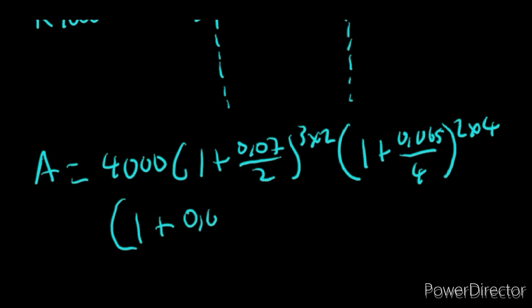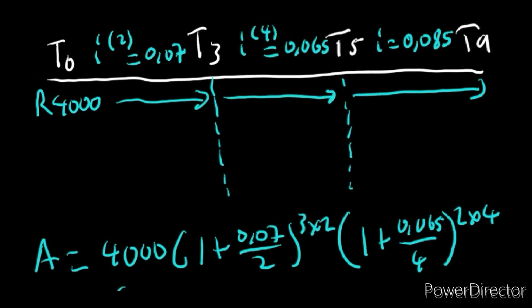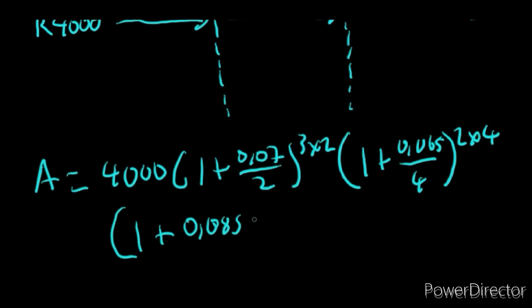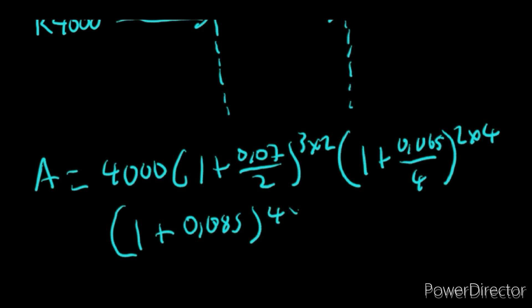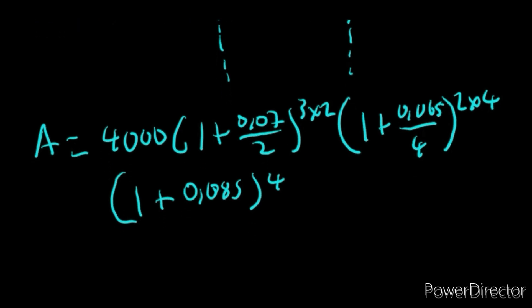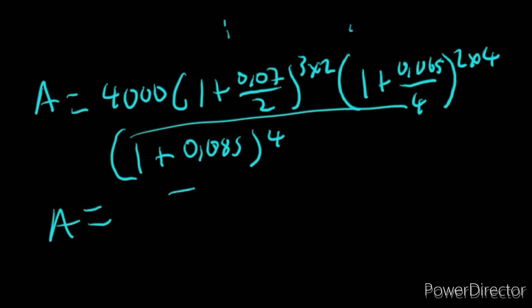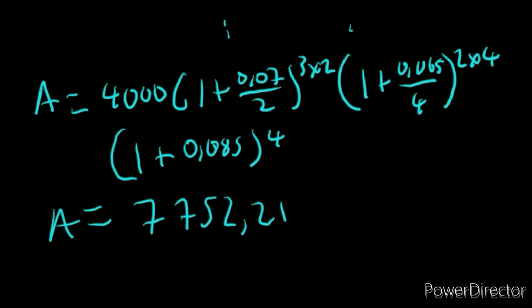It was 8.5%, so 0.085 per annum — no dividing needed. And it was 4 years, so the exponent is just 4. All you have to do is type this whole expression in the calculator exactly as it is so that you don't round off before the final answer. The answer will be 7752.21 rands. That's how it is.